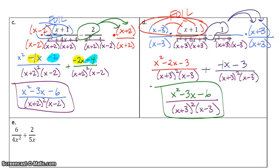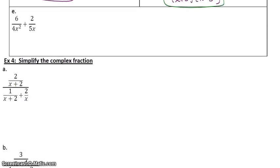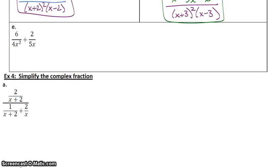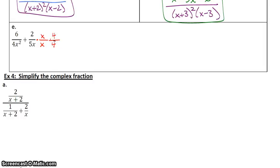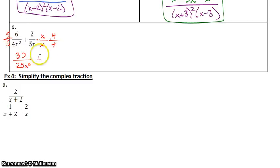Let's look at e. Example e is one where you actually don't have to factor anything — I get to right away start multiplying. Ask yourself: what does the left side have that the right side does not? Notice the left side has x squared; the right side just has x. So to make it match, I need another x. Then the left side has a 4 and this one does not, so I also need a 4. What do I need on the left that the right side has? It doesn't need an x but it needs a 5, so I'll multiply by 5 over 5. I'm left with 30 over 20x squared plus 8x over 20x squared.